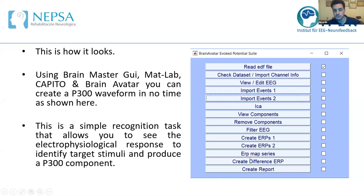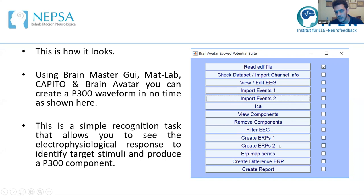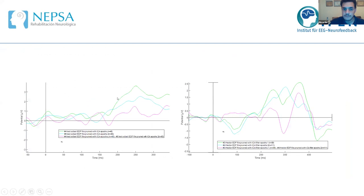The Brain Master GUI provides a step-by-step pipeline to produce an ERP: mark the events, introduce the event, run ICA, view the components, remove bad components, filter the data, create ERP one, create ERP two, produce them, and create a difference ERP — the waveform shown at the beginning. You simply follow the steps, generate a report, and the ERP is done. You can then see whether your subject has a bigger or smaller amplitude, or a slower P300.